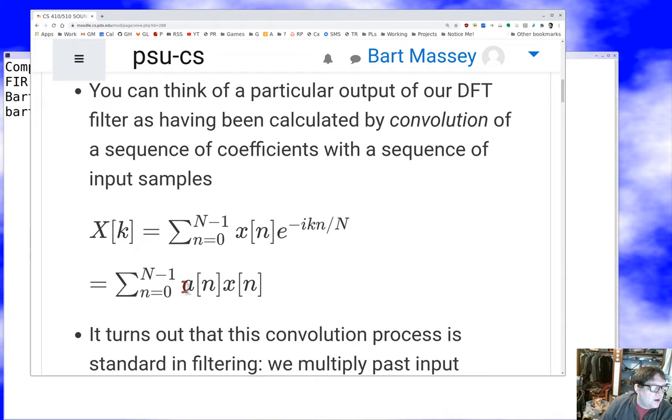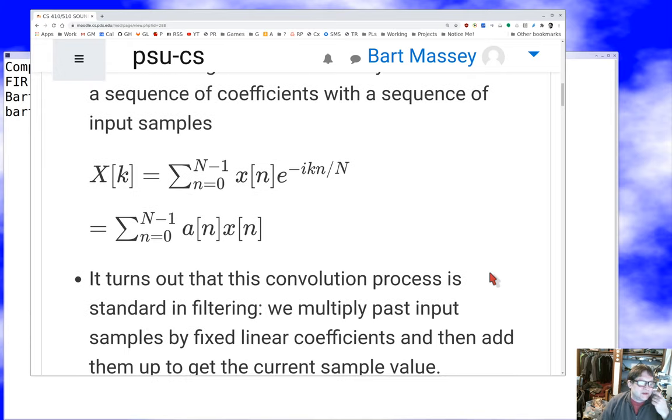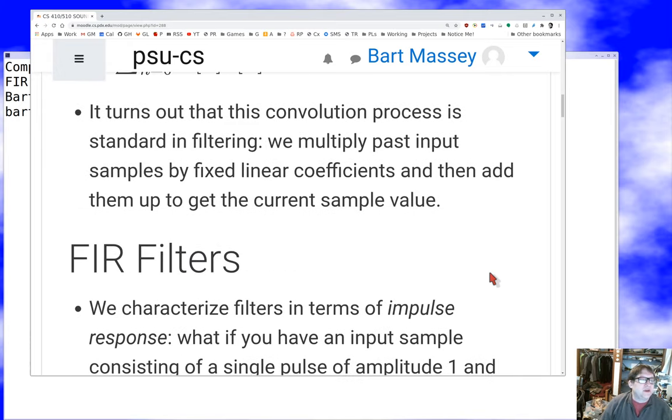If we think of this coefficient e to the minus i blah as an arbitrary constant a, albeit a complex constant, then we can think of this thing as just a sum of terms, each of which is some coefficient times the n-th sample for some n. That is a standard convolution operation.